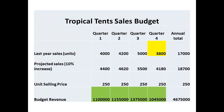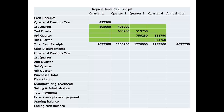We follow the same procedure for the remaining quarters, taking 55% of revenue in the quarter when the sale is made and 45% in the following quarter. We now have our completed budget for cash receipts, and we add the receipts to give the total cash receipts for the year.